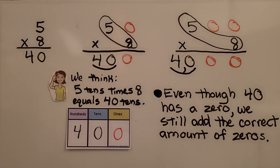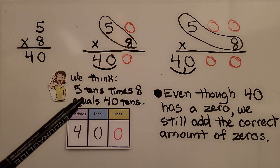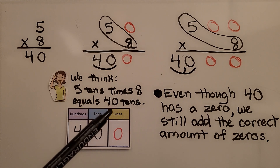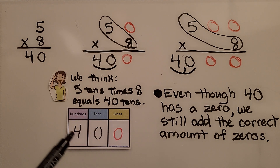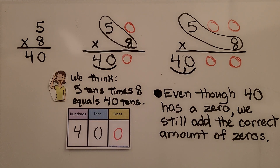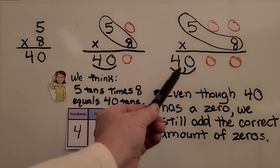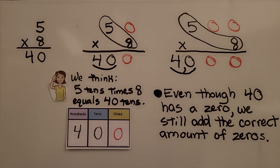Take a look at this one. 5 times 8 is equal to 40. If we have 50 times 8, we think 5 tens times 8 is equal to 40 tens — that's the same thing as 400. We have our 40 with one zero. 500 times 8 would be 4,000. So even though 40 has a zero, we still add the correct number of zeros — we have our 40 with the two zeros to get 4,000.